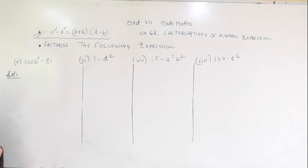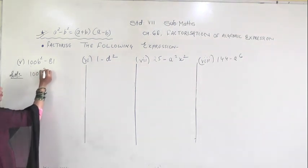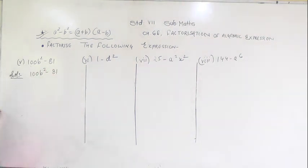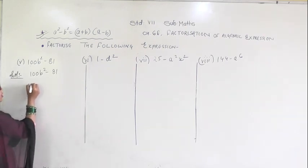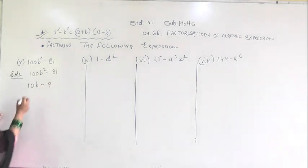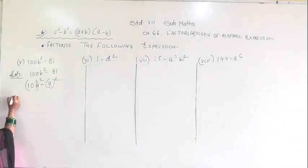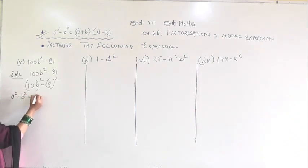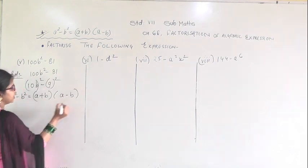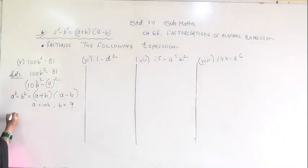Question number 5: 100b squared minus 81. Convert into the form of a squared minus b squared. Since 10 squared is 100, we get (10b) squared minus 9 squared, as 9 squared is 81. Using a squared minus b squared equals (a plus b)(a minus b), with a equal to 10b and b equal to 9, substituting gives (10b plus 9)(10b minus 9).